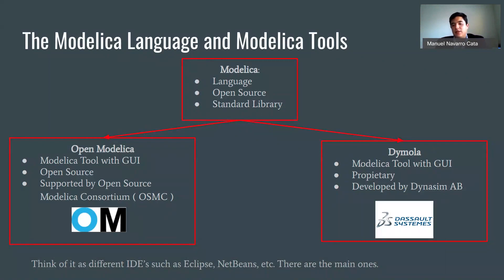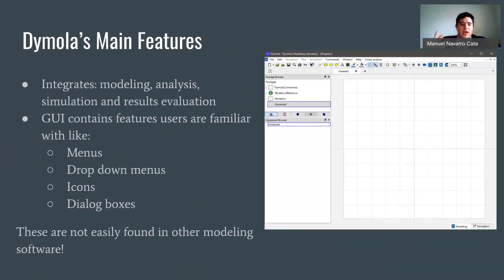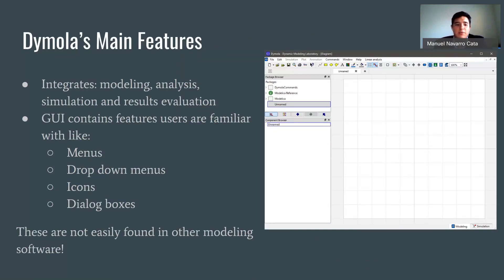There are also proprietary libraries and solvers that you can purchase from different companies. Dymola's main features integrate modeling analysis, simulation, and result evaluation. This GUI is important because it gives users things they're familiar with — menus, drop-down menus, icons, and dialog boxes — which are not easily found in other modeling software.